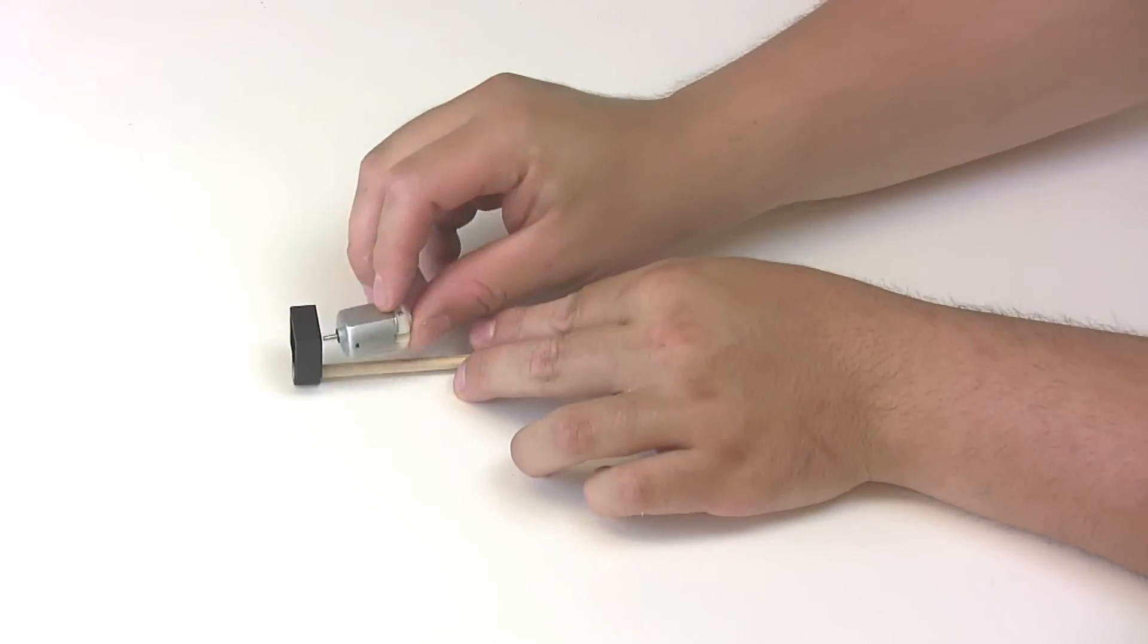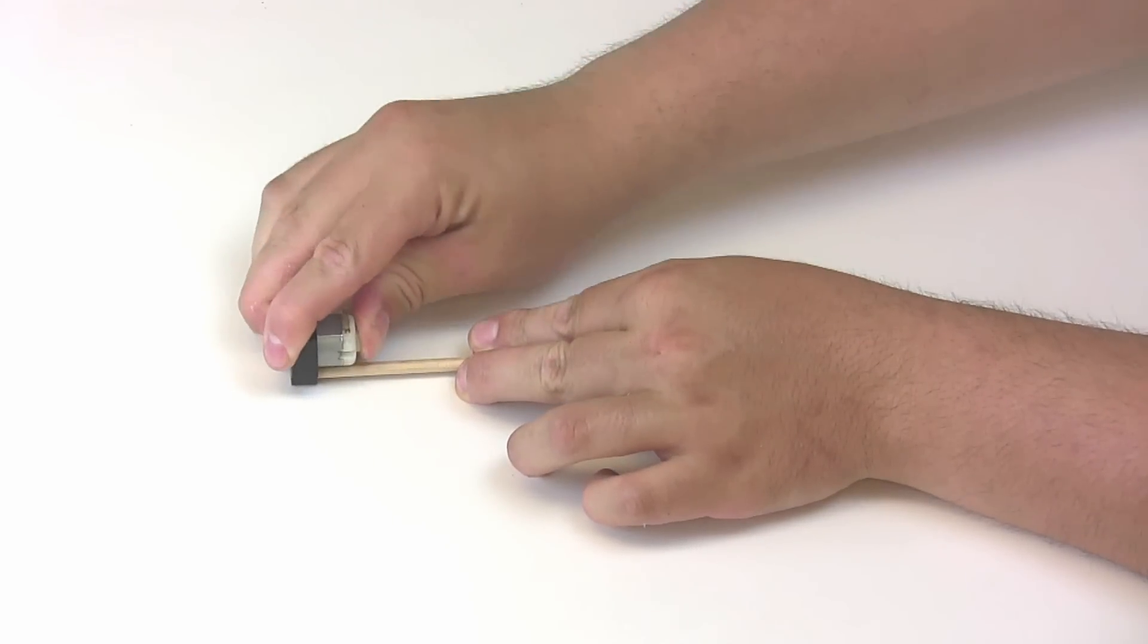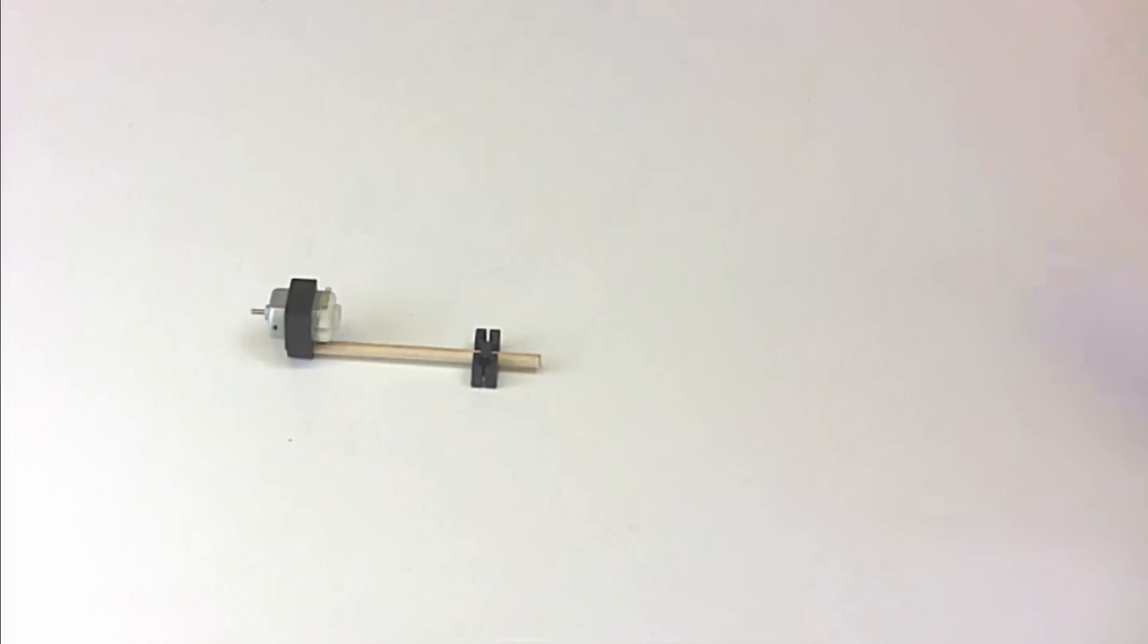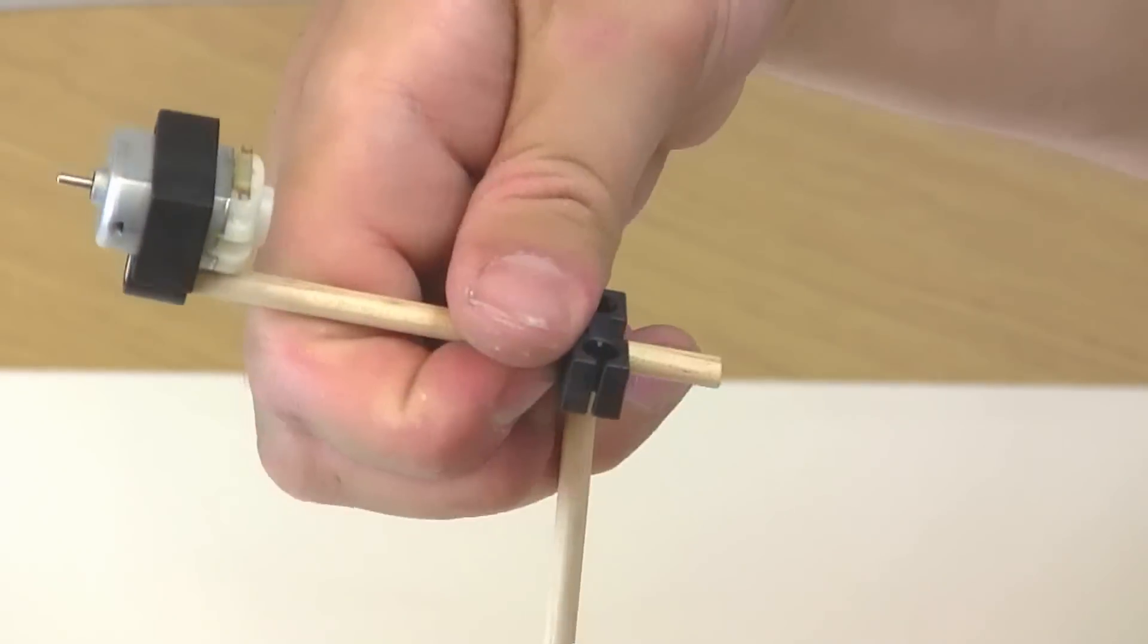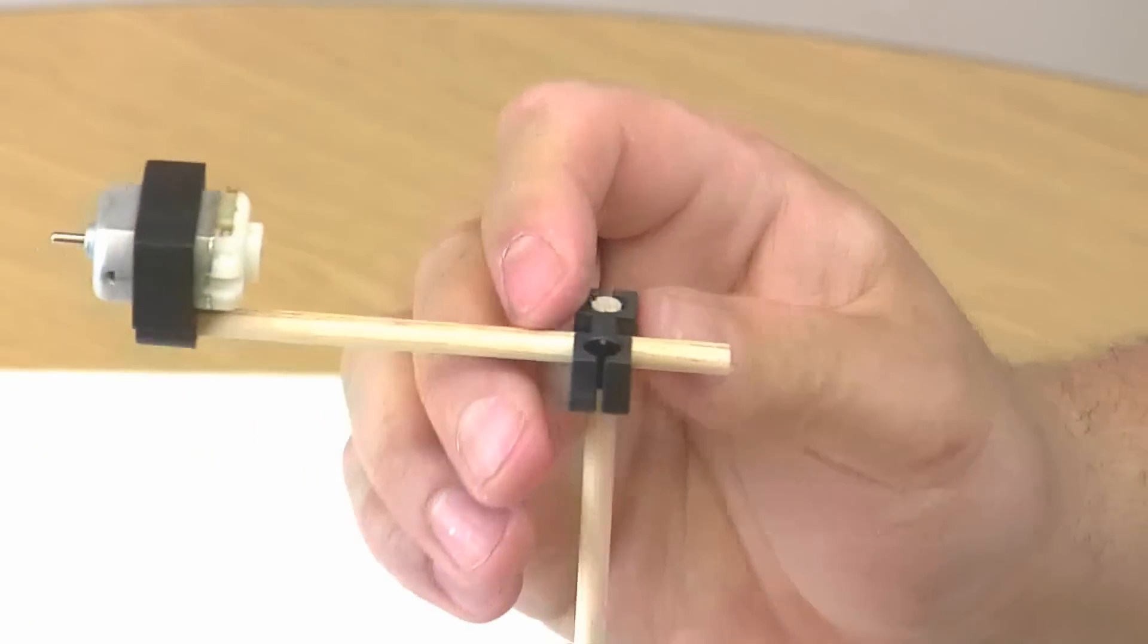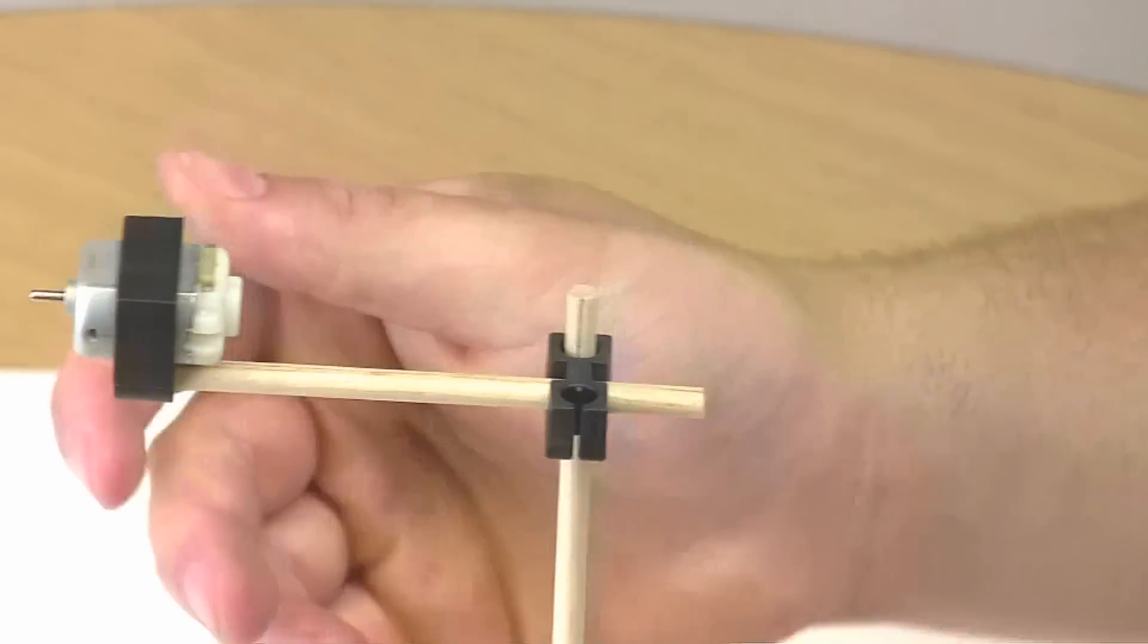Take your motor and place it into the motor mount. Just place the motor bracket onto the dowel and push it down a little bit. If it's a little crooked, twist your motor mount until it's straight.